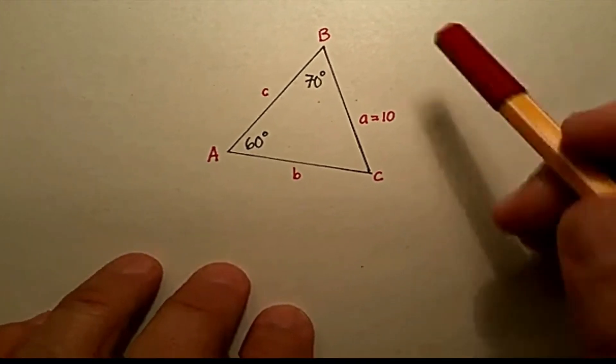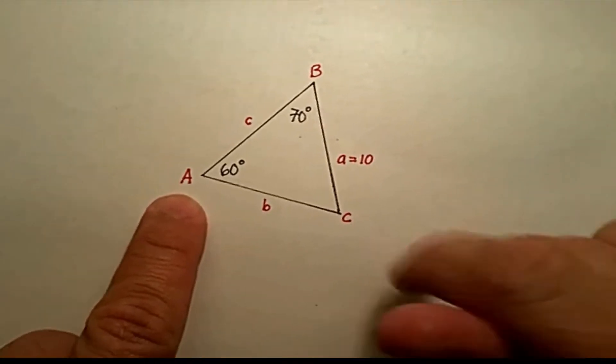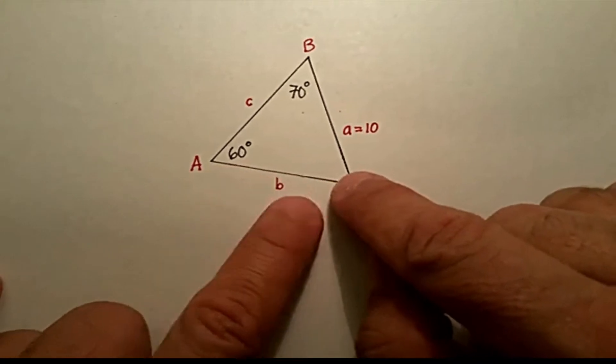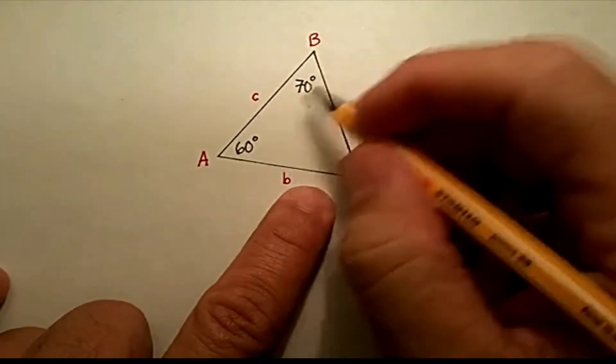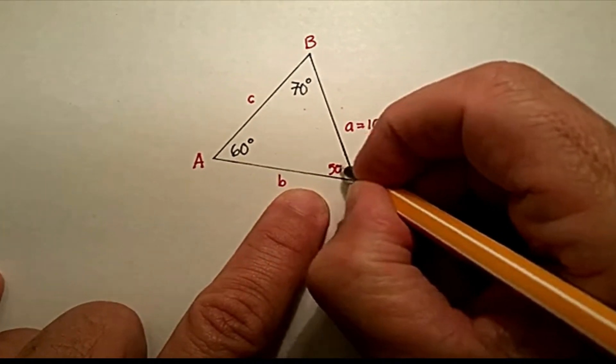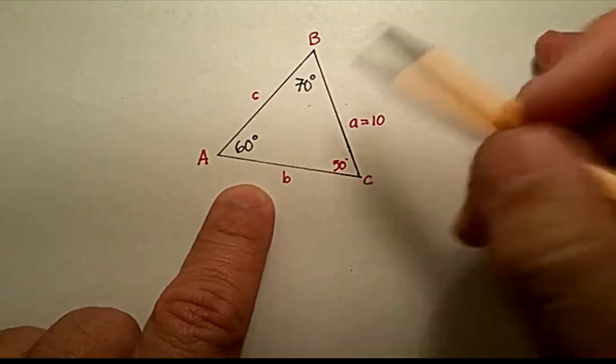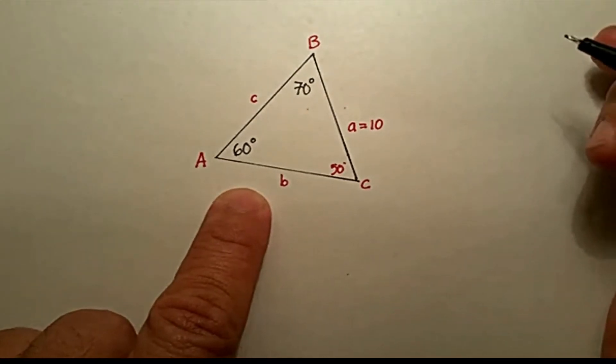So, here is a non-right triangle. This would be an acute triangle, right? Because 60 and 70 is 130, which would make this equal to, what? If that's 130, subtract 180, 180 minus 130 gives me 50. So, now I have all the angles in this particular triangle.